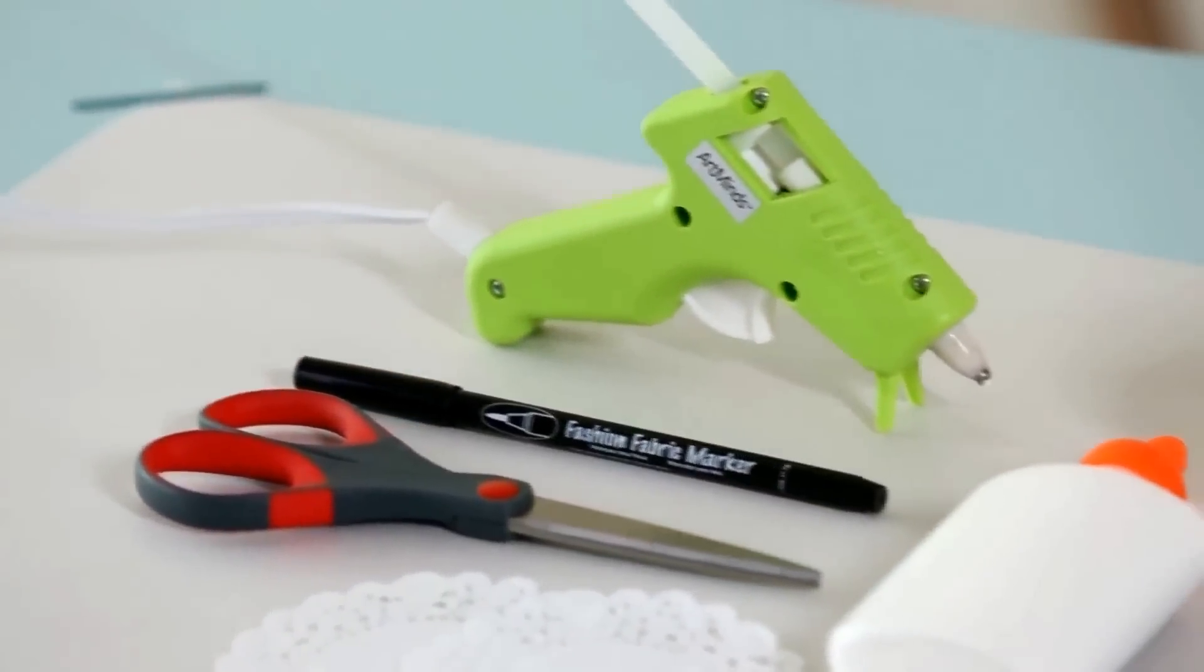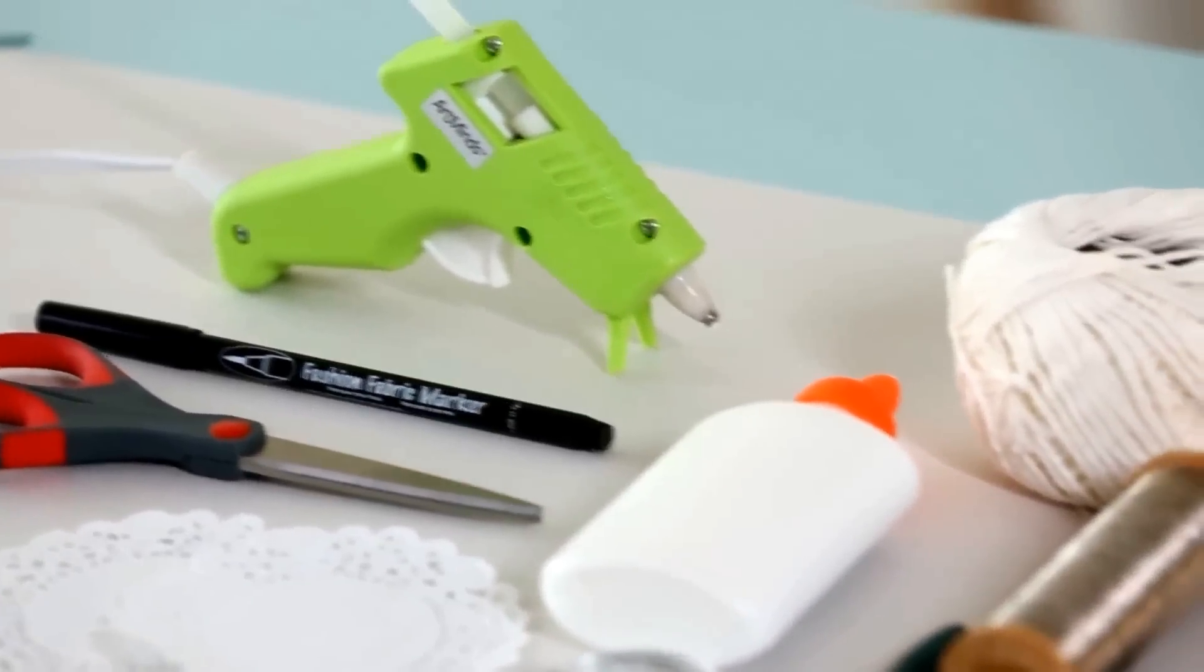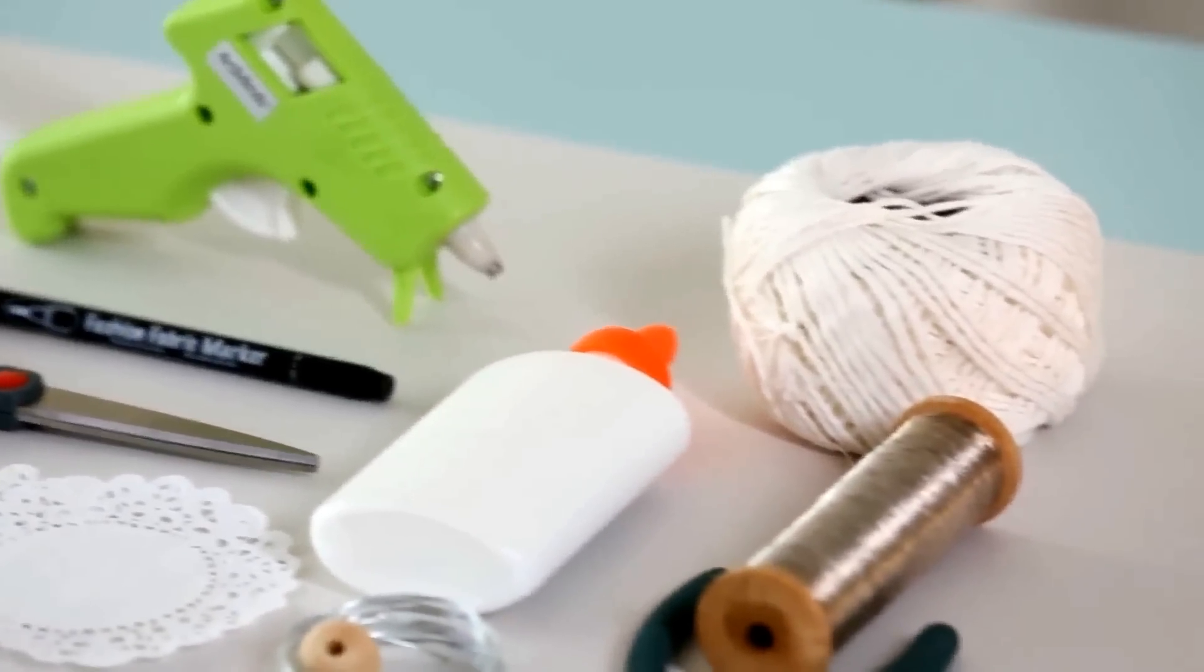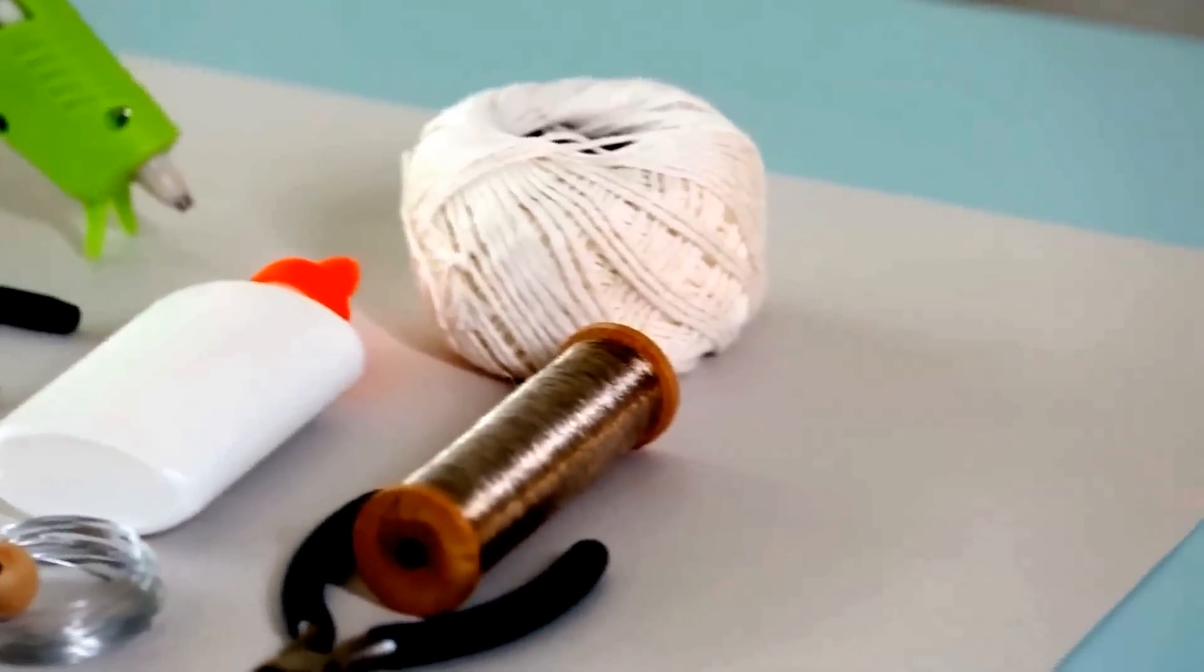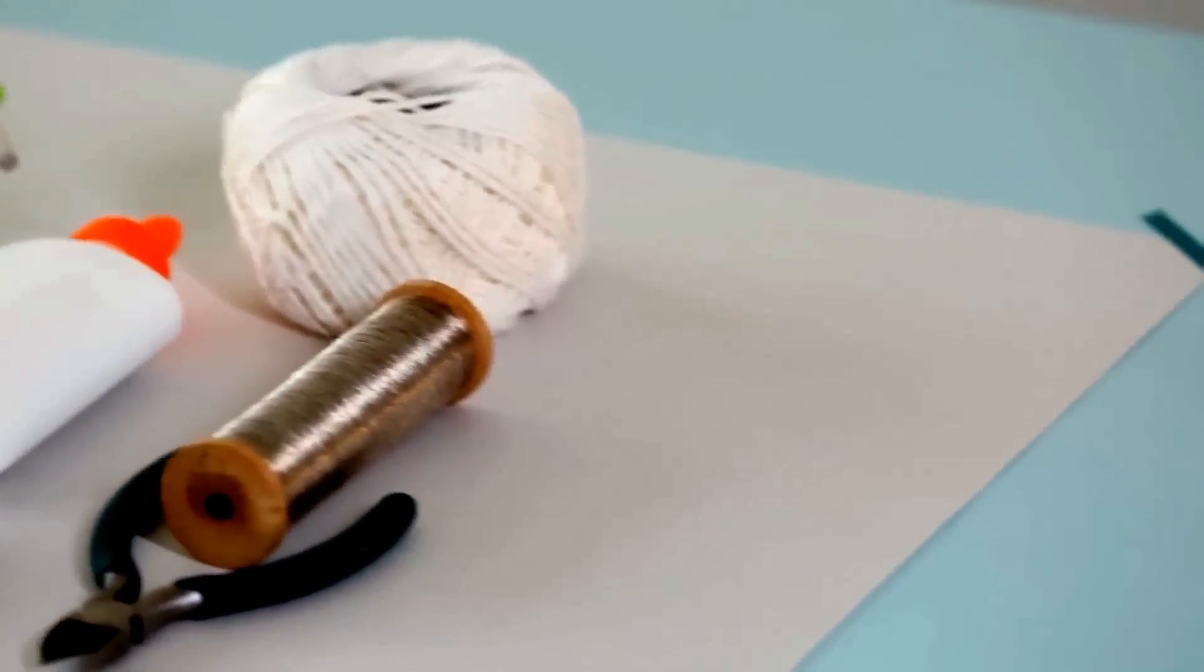For this project you will need two four inch white doilies, scissors, a thin marker, a hot glue gun or craft glue, a three quarter inch wooden bead, white string or yarn, wire, wire snips and a thin string.